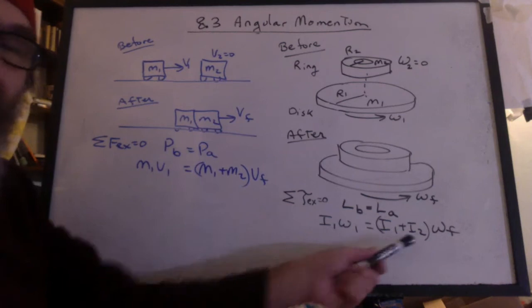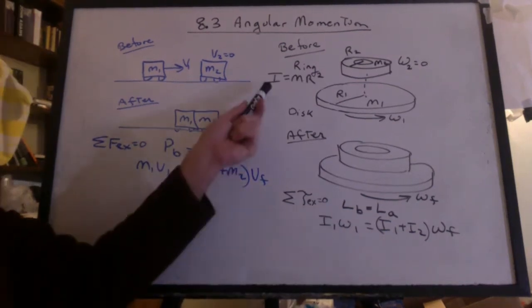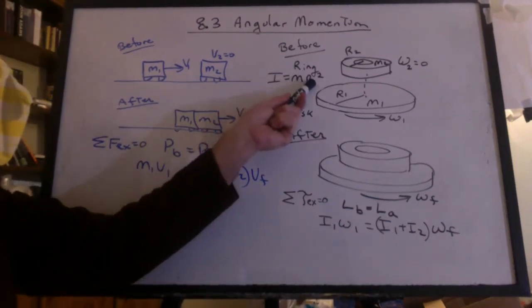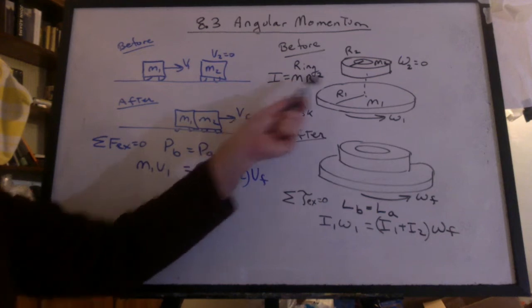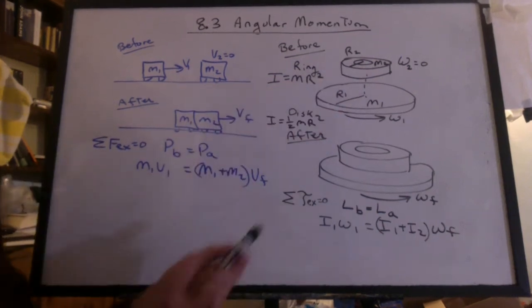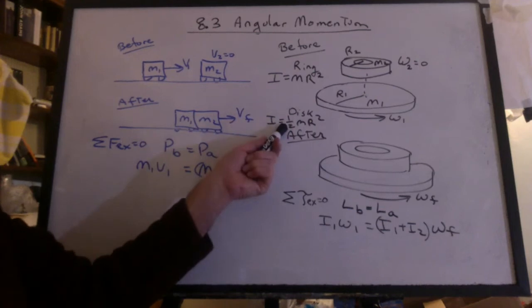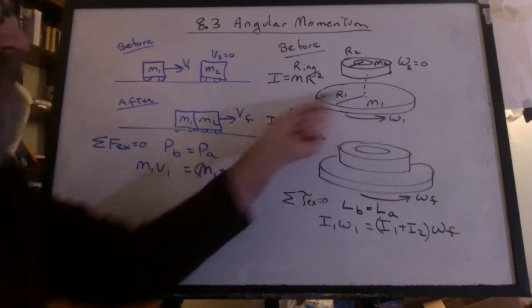What are these I's? You might recall that I for a ring is MR squared. M is all at the full R. I for the disk has a one-half in front of it. The mass is distributed throughout.